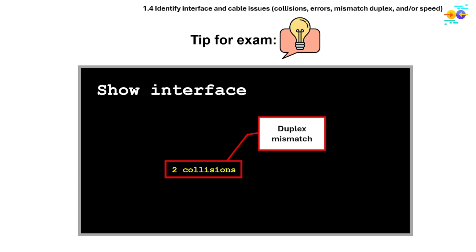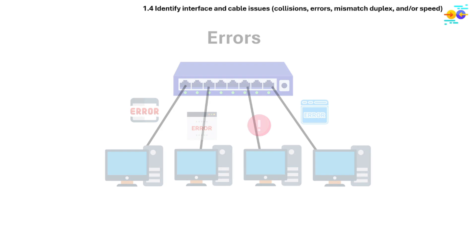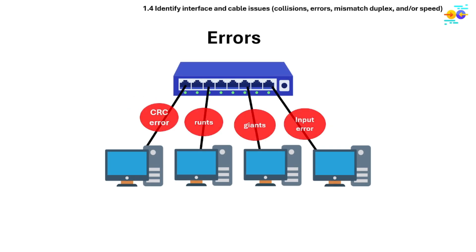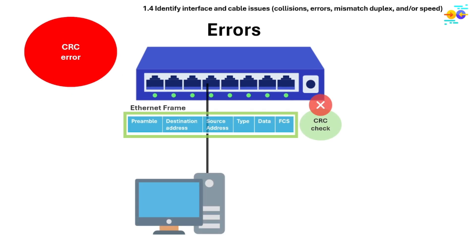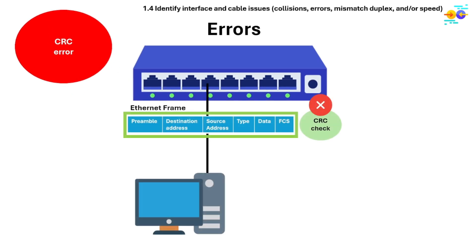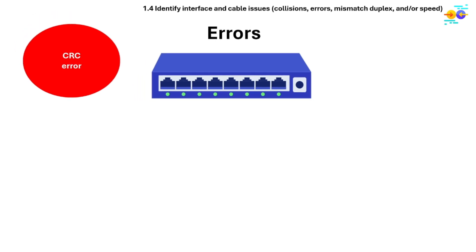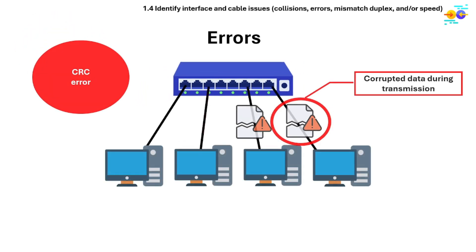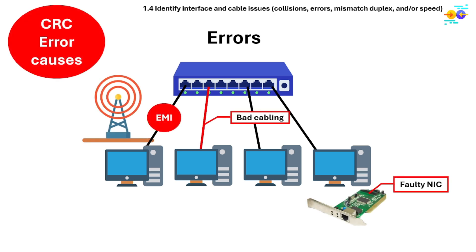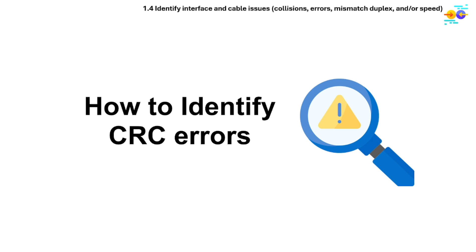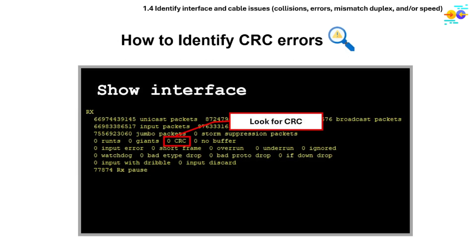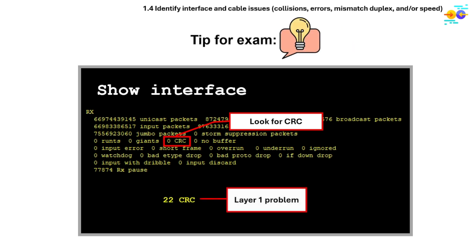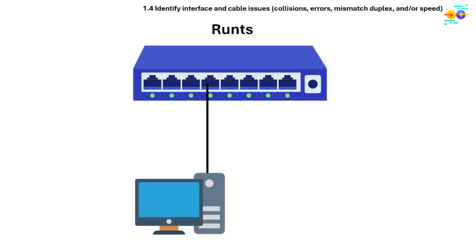If you're seeing collisions on a switch, it's likely a duplex mismatch. Interface errors include CRC errors, runts, giants, input errors, and more. A CRC error occurs when a received Ethernet frame fails the CRC check, indicating the frame was corrupted during transmission — commonly due to bad cabling, EMI, or faulty NICs. To identify CRC errors, use the show interface command and look for the CRC counter. CRC errors are mostly a Layer 1 problem; if they keep increasing, check cables, connectors, or try a different port.